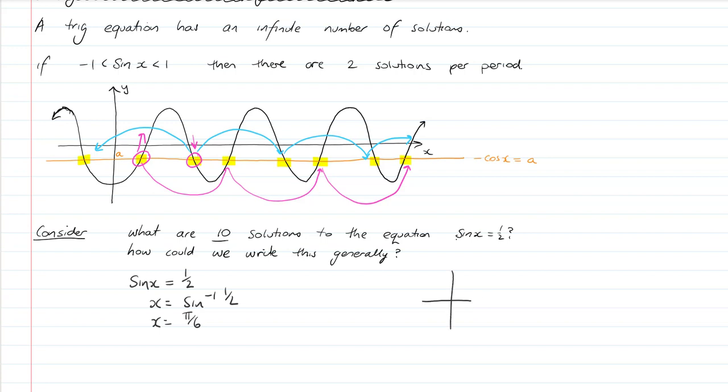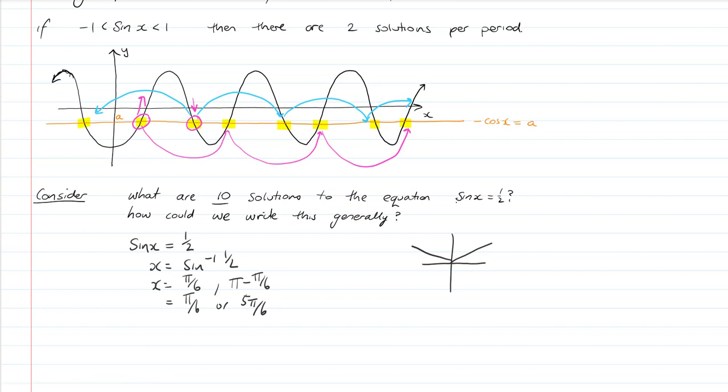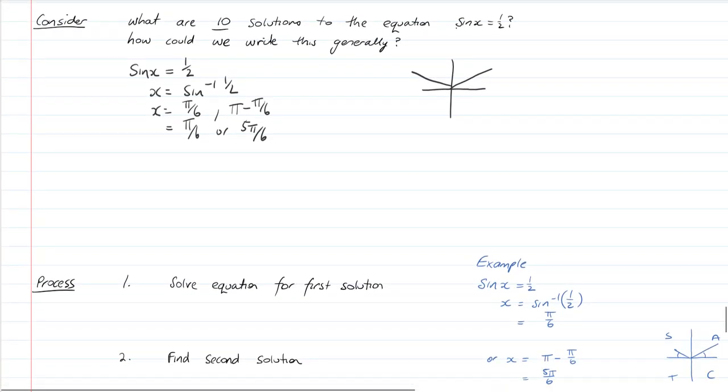Sine is also positive in the second quadrant. So π minus π/6 is the other solution, which is 5π/6. So we have x equals π/6 or 5π/6. And then we can get a further 8 solutions, just by adding and subtracting groupings of 2π. This is going to lead us towards generalized solutions.